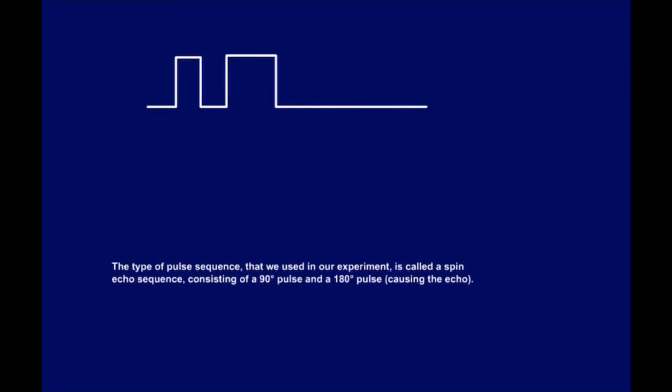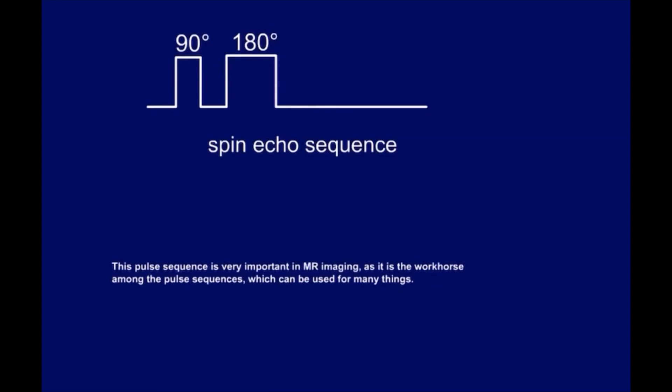The type of pulse sequence that we used in our experiment is called a spin echo sequence, consisting of a 90-degree pulse and a 180-degree pulse, causing the echo. This pulse sequence is very important in MR imaging, as it is the workhorse among the pulse sequences, which can be used for many things.